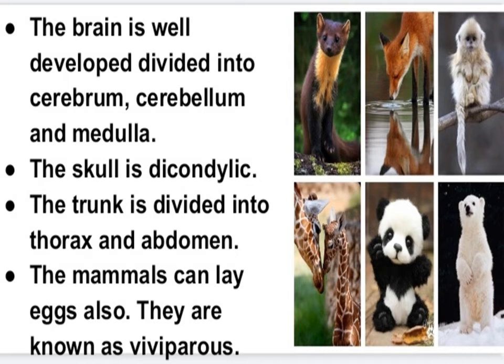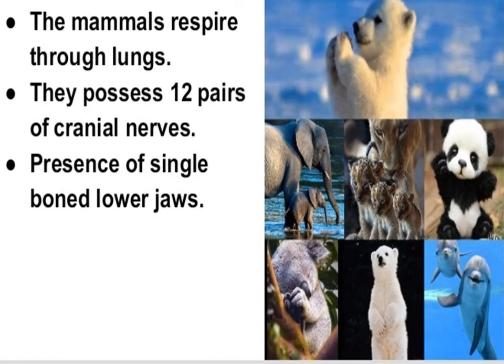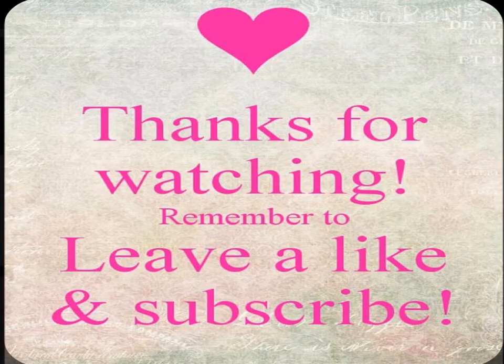The skull is dicondylic. The trunk is divided into the thorax and abdomen. Some mammals can lay eggs — these are known as oviparous. Mammals respire through lungs. They possess 12 pairs of cranial nerves. There is presence of a single lower jaw bone. Thank you all for listening and watching my videos.